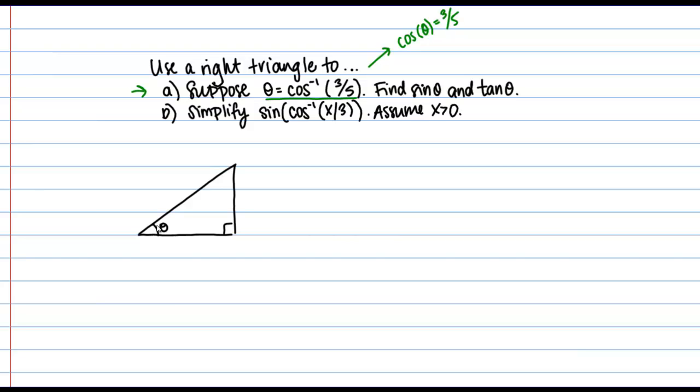Now remember the cosine is the adjacent over the hypotenuse. So then I want this side to be 3 and this side to be 5. 3 here is my adjacent side and 5 is my hypotenuse.